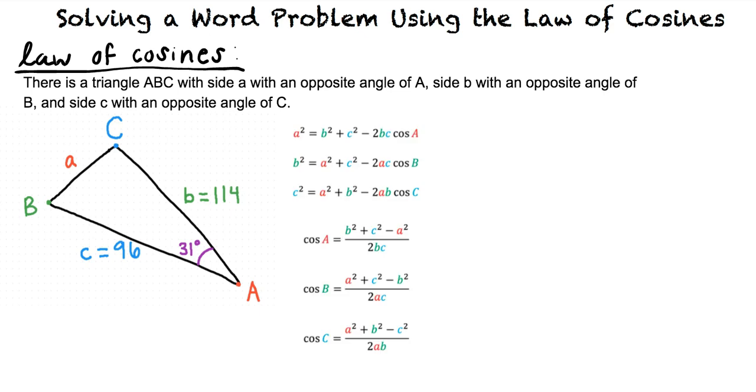The equations shown here are used to solve for an unknown side or angle of the triangle. In our problem, sides B and C and the angle A are known. We want to solve for side A, so we will use the equation A squared is equal to B squared plus C squared minus 2BC cosine of A.